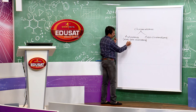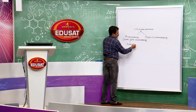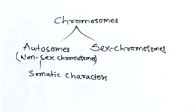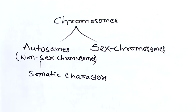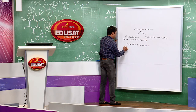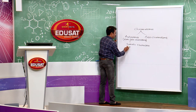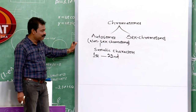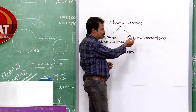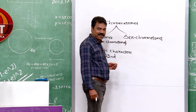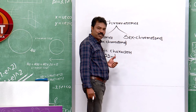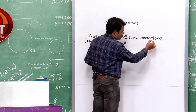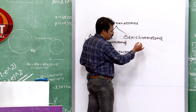In case of human beings, 23 pairs of chromosomes are there, out of which the first 22 pairs are called autosomes. The sex chromosomes are responsible for determination of sex, sexual characteristics, and sex-linked traits. Sex chromosomes are also called allosomes or heterosomes.